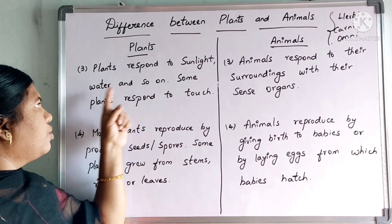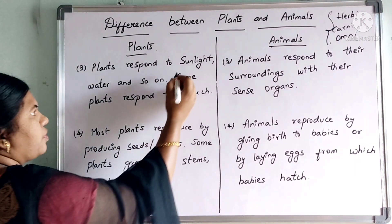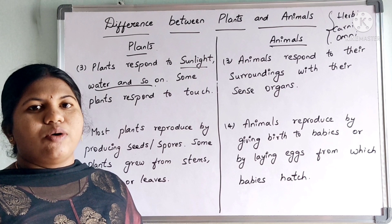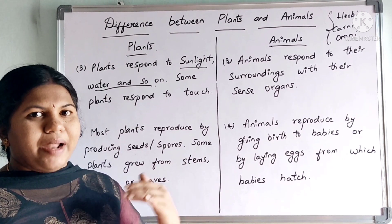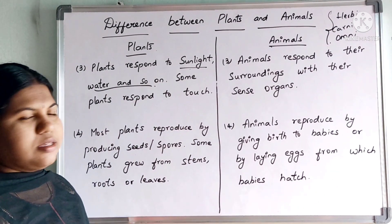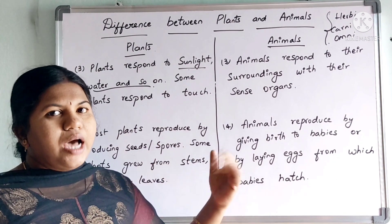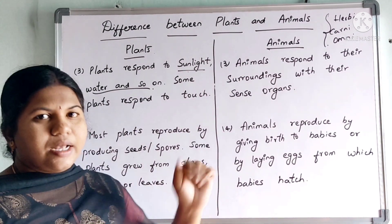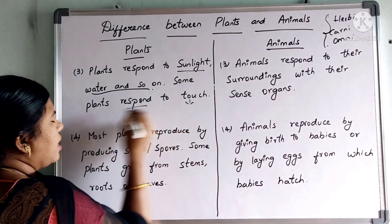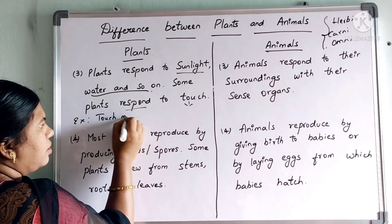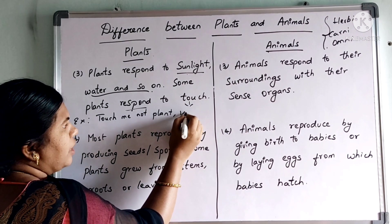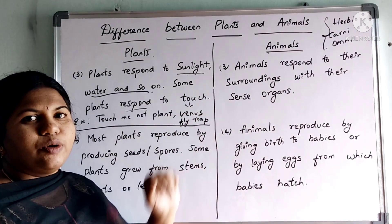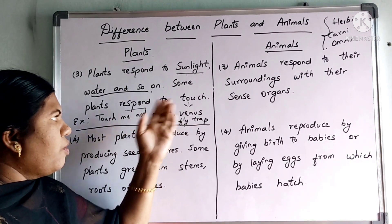Plants respond to sunlight, water, and so on. Some plants also respond to touch. For example, if you stop pouring water to the plants for a week, you can see the plant is going to die — there is a response from plants depending upon sunlight and water. Even if you stop sunlight and put a plant in a dark room, they are going to respond in a different way. When you touch some plants, they respond to touch as well. For example, the touch-me-not plant and also Venus flytrap are sensitive to touch — when you touch them, you can see the leaves are going to close.